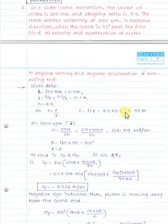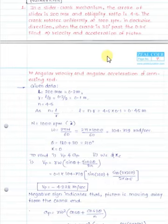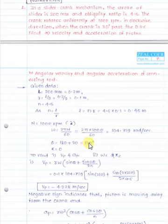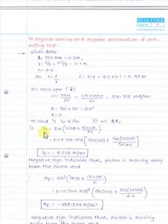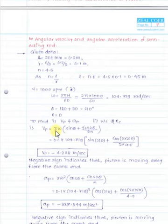The crank angle theta must be measured from IDC. Since the angle is 30° past ODC, and the angle from IDC to ODC is 180°, theta = 180° + 30° = 210°. Since the crank rotates with uniform angular velocity, alpha = 0. Using vp = r·ω·[sin(theta) + sin(2theta)/(2n)], substituting all values gives vp = −4.228 m/s.